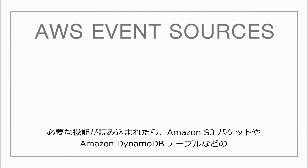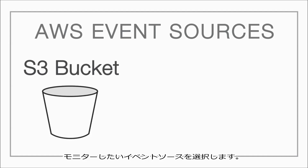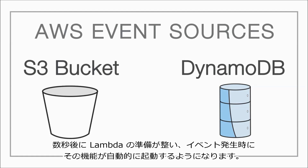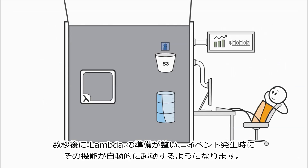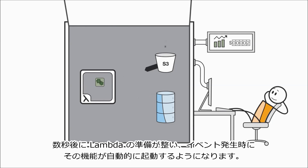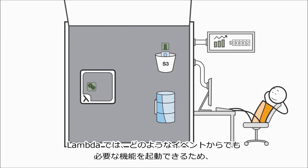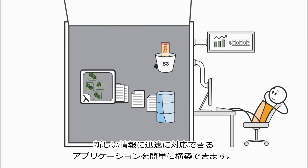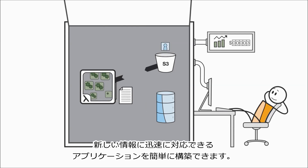Once your function is loaded, you select the event source to monitor, such as an Amazon S3 bucket or Amazon DynamoDB table, and within a few seconds, Lambda will be ready to trigger your function automatically when an event occurs. With Lambda, any event can trigger your function, making it easy to build applications that respond quickly to new information.